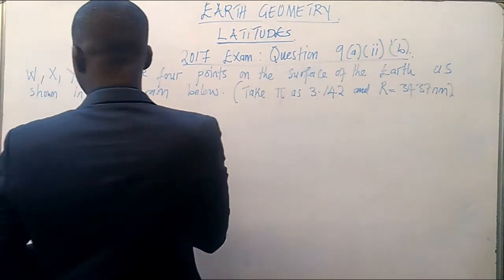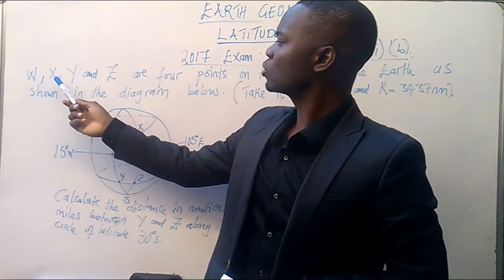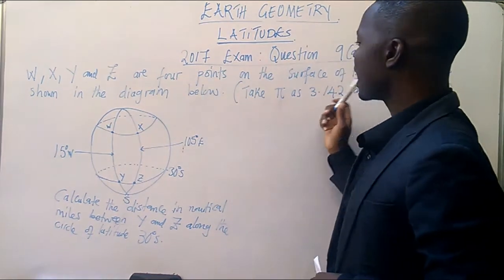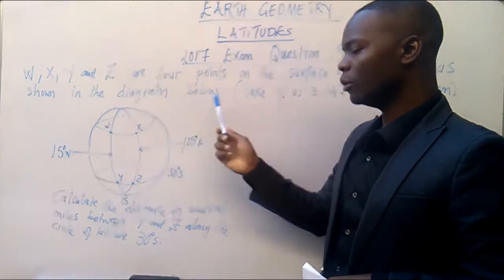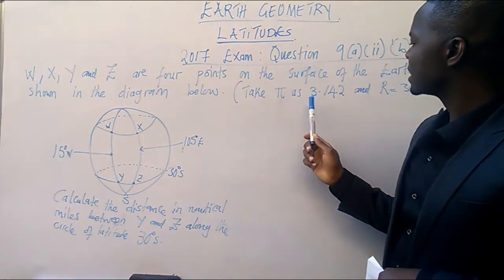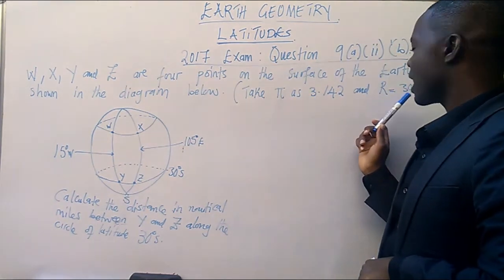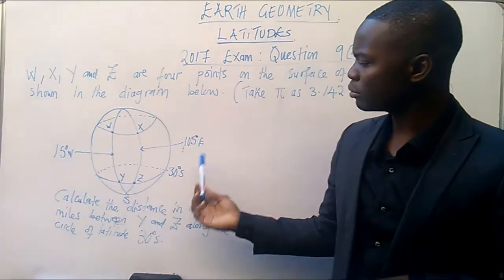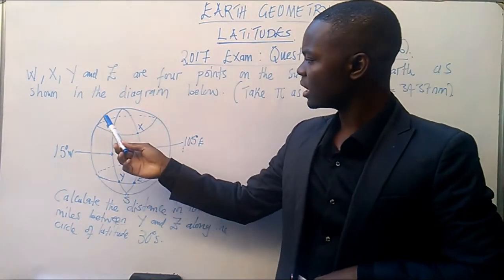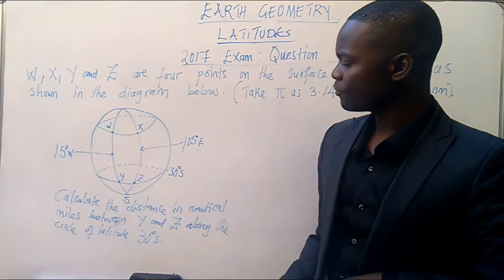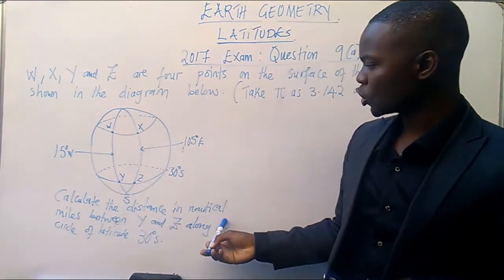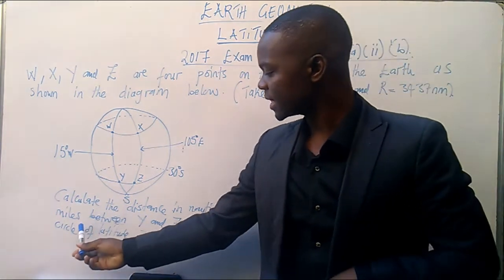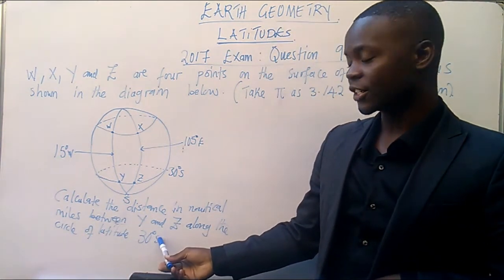So the question reads, W, X, Y, and Z are four points on the surface of the earth as shown in the diagram below. So, take π as 3.142 and R as 3437 nautical miles. This is the earth, the globe. And then we have got W, X, Y, Z.